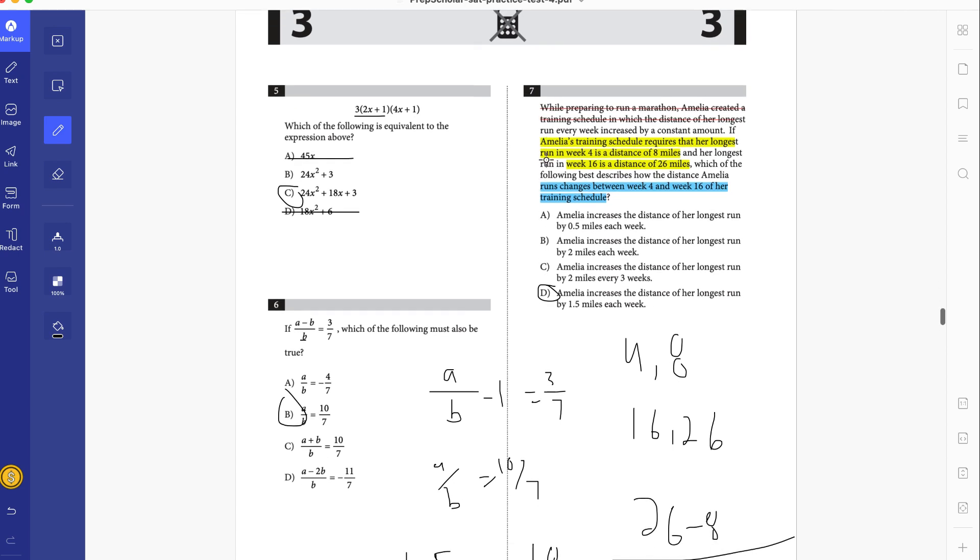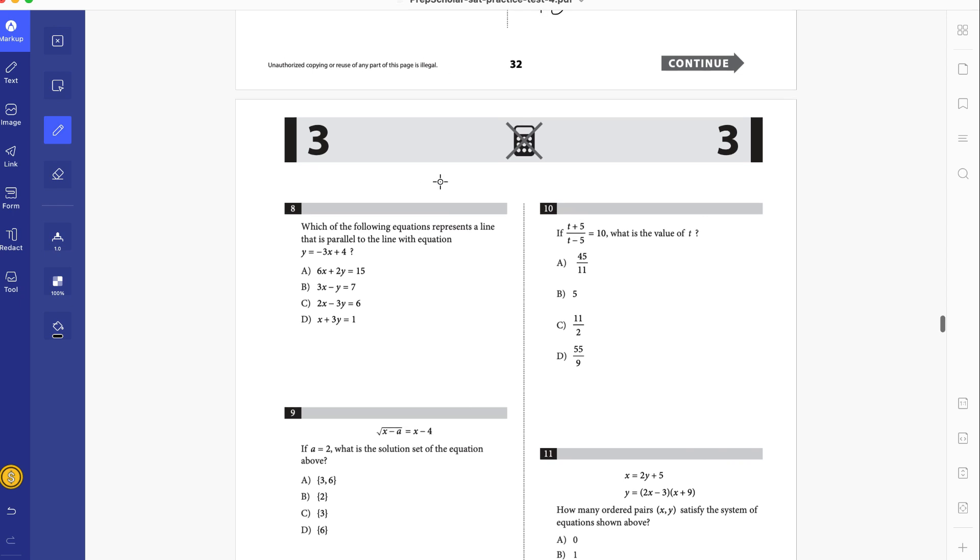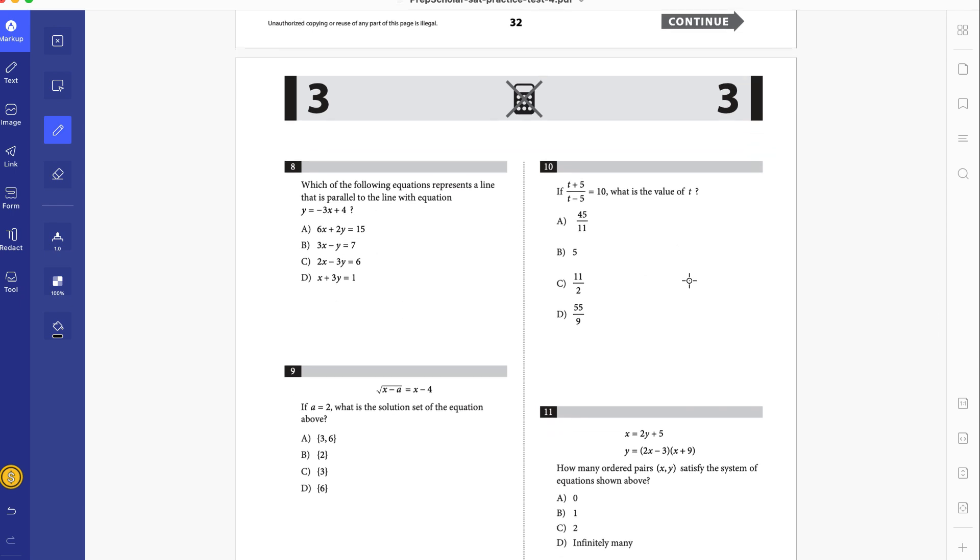So distance of the longest run is by 1.5 miles every week. It's increasing by that much. That's the answer to that. Again, super simple and not hard. So we're going to finish this up. These last from 8, 9, 10. And the next video will be 11 to 20.